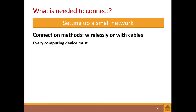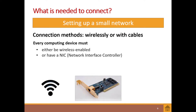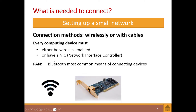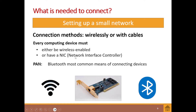Connection methods include wireless or cables. Every computing device must either be wireless-enabled or have a network interface controller. Personal area networks work most often with Bluetooth. The network interface controller shown here is a card that plugs into a desktop computer's motherboard. Even your cell phones have their own network card allowing for wireless connectivity.